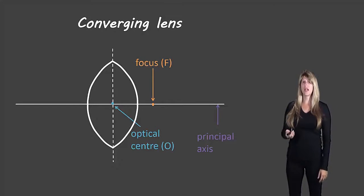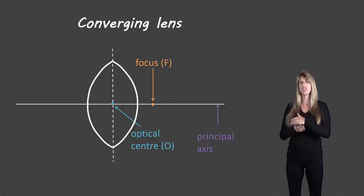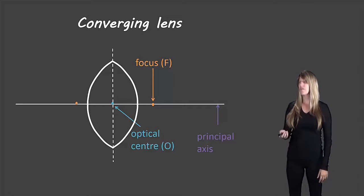Another point along the principal axis is the focus and this is where the rays converge as they go through the converging lens. So converge means where they meet. So the focus is given the symbol F.